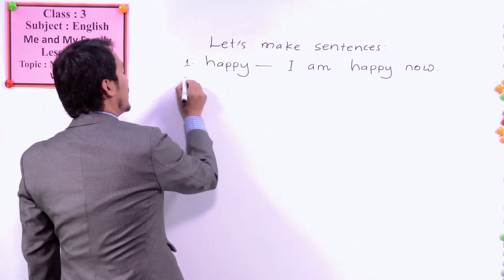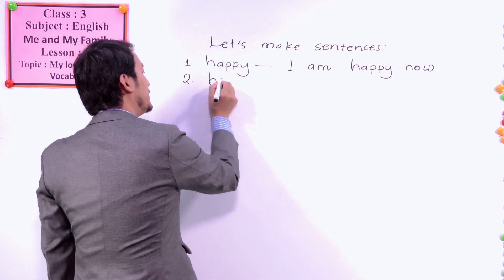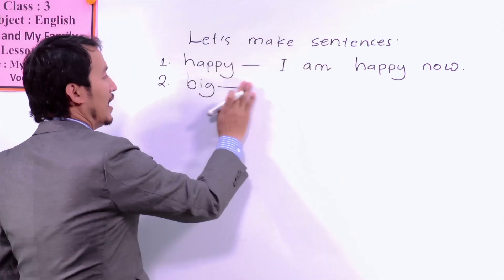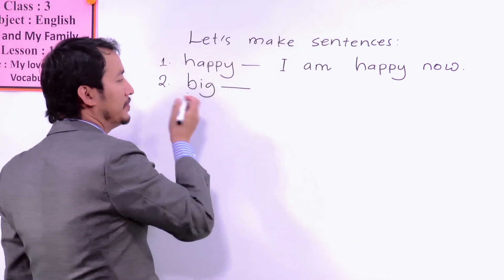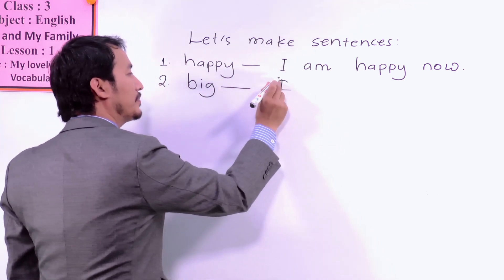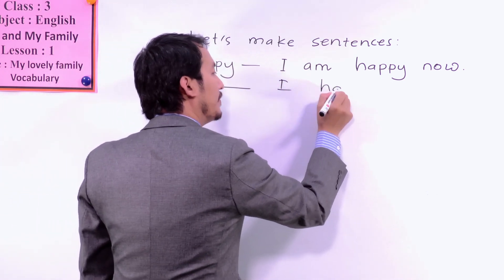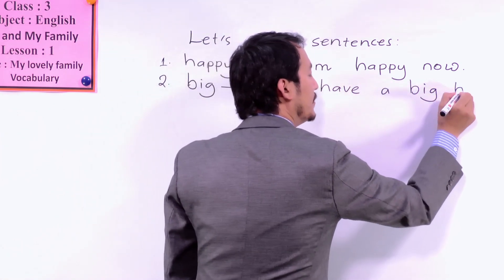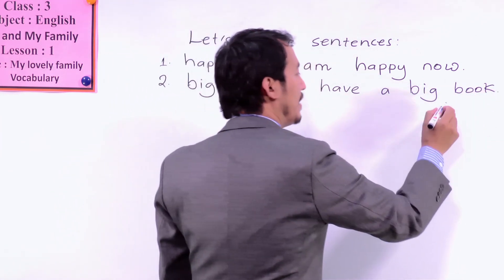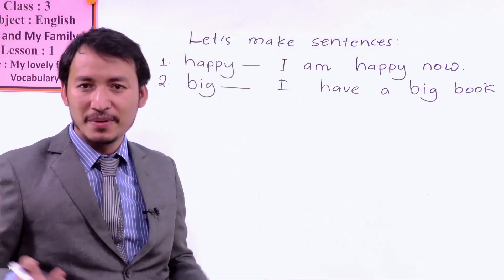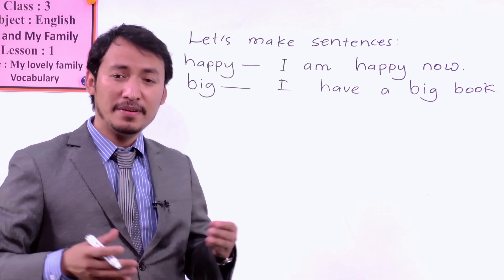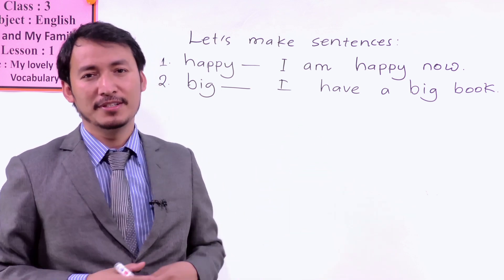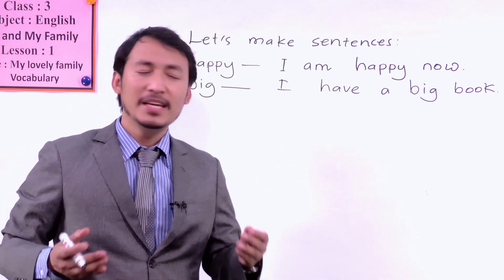Another word is big. Can you tell me your sentence? Let's see how you made your sentence and how I am going to make mine. I have a big book. I have a big book. If you have a very big book or story book with a lot of pictures, then you can say, 'I have a big book.' Or you can say, 'We have a big house.'